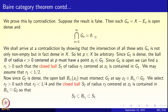Empty set is not dense unless the space itself is empty. So let us take an arbitrary point P in X. What does it mean to say the intersection is dense? It means that any point is a limit point of this set. Since G_1 is dense, the ball of arbitrary radius centered at P, call it B_1(p), must contain a point Z_1 in G_1.